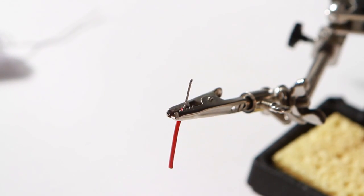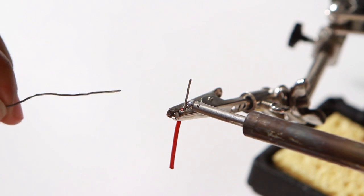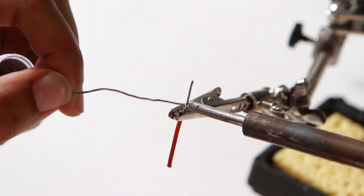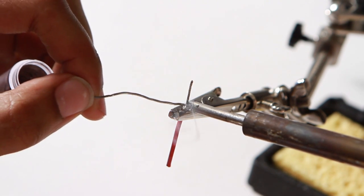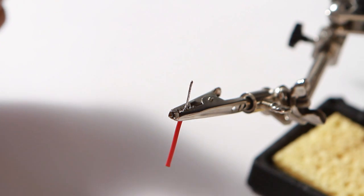When soldering wires, first strip them to an appropriate length, then twist them into a small tight braid. Now you have to tin them. To do this, place the tip of your iron on the metal braid. Next, add solder to the heated wire and it will spread thanks to capillary action.